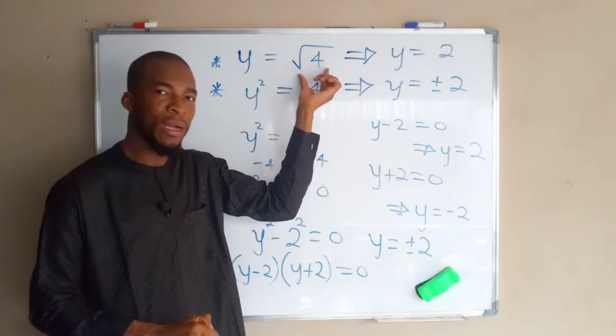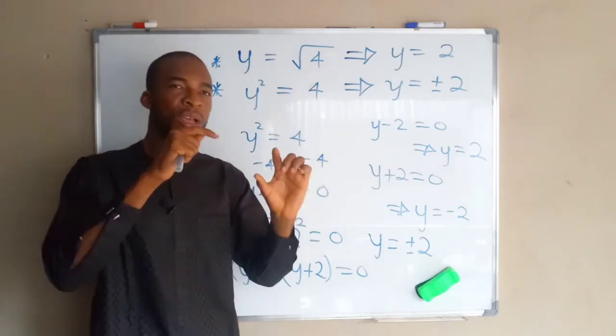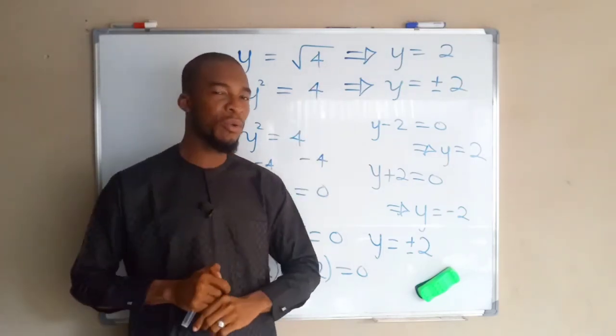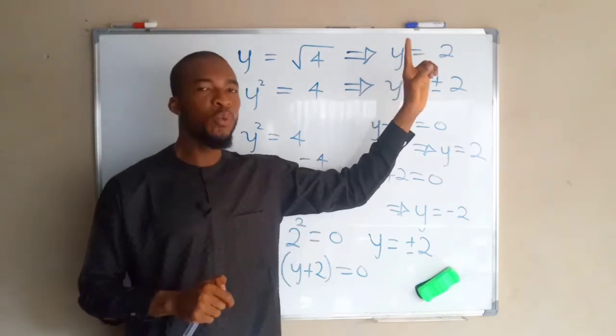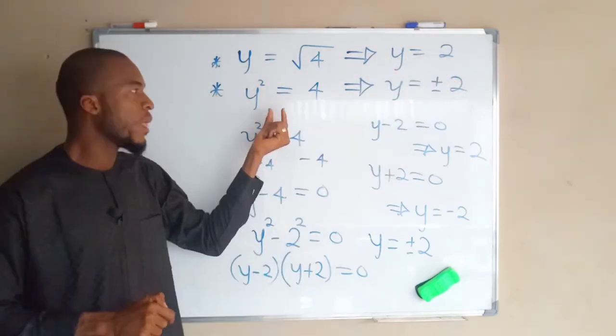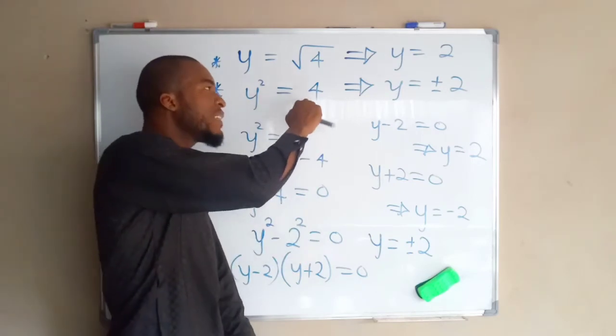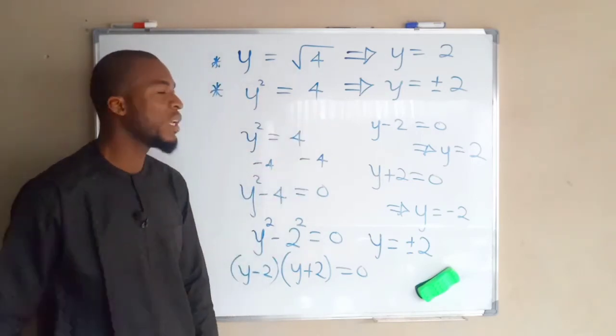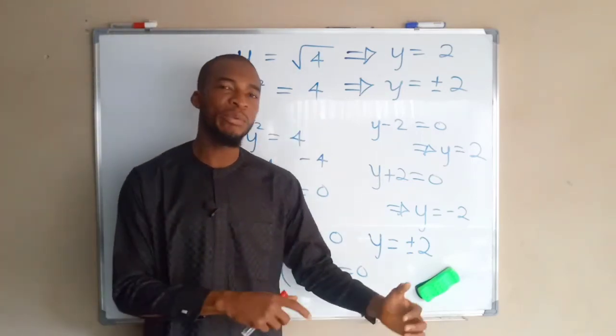Let me make this conclusion. Put it at the back of your mind that whenever you have a square root of a number where this square root is already attached to that number, the value will always be positive. And if the square root was later on being introduced, you have to add that plus or minus.